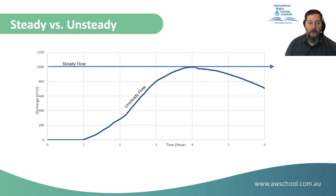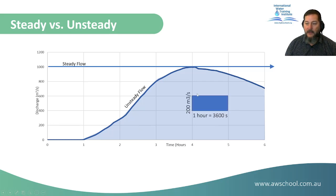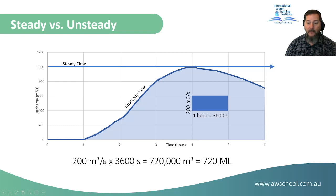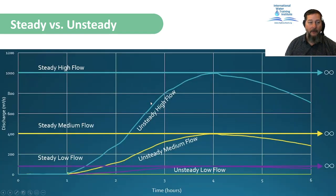The area under the curve is an integral, and in our case it represents a volume — that blue shaded area is a volume of water. Along the y-axis we have discharge, so the dq from 400 to 600 is 200 cubic meters per second. Converting time to the same units and multiplying length by width for that box: seconds cancel out, giving 200 cubic meters per second times 3,600 seconds equals 720,000 cubic meters. Inside that blue box is a volume of 720 megalitres.